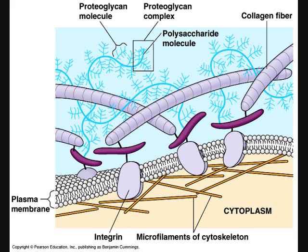The main structural protein in the ECM is collagen. Collagen forms strong fibers outside the cell and accounts for about half of the total protein in the human body.